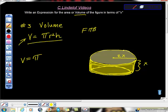So we have π, the radius is 2x, so we have 2x squared, and h is also x.